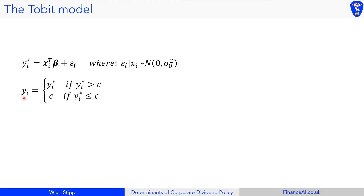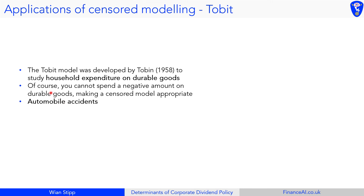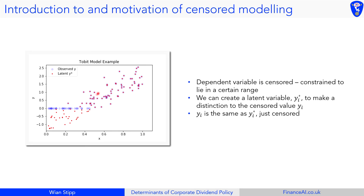The second line says that yi, the dependent variable we observe, is equal to yi* if yi* lies above the censored value c, and equal to c if yi* is less than or equal to c. This makes sense: we observe yi* when it is above c, and we observe the censored value c when yi* is less than or equal to c.